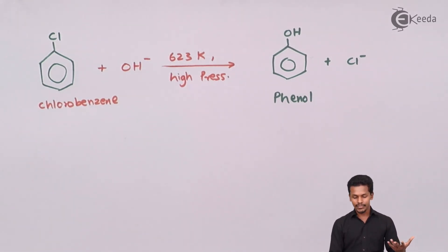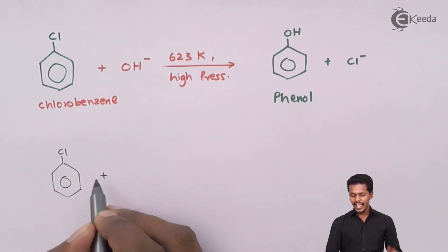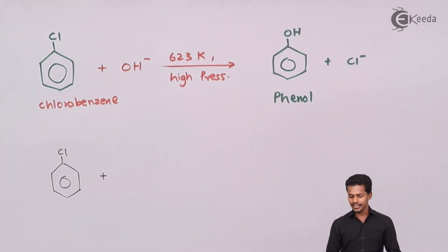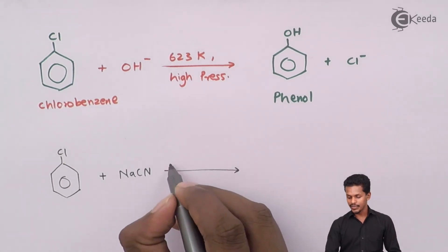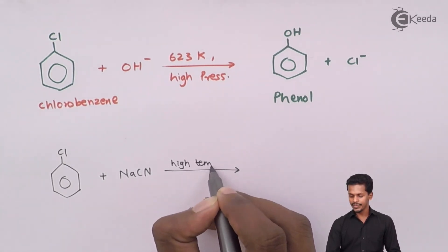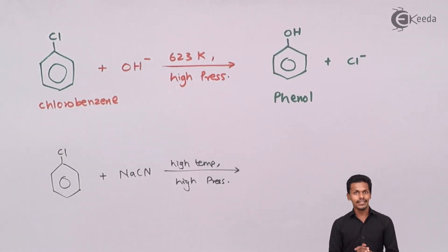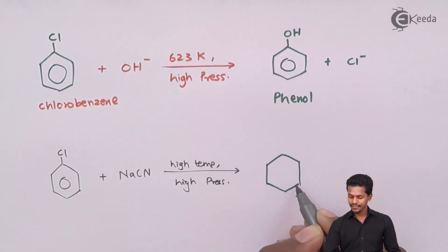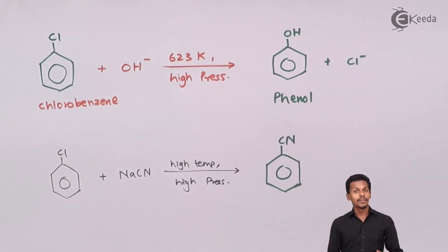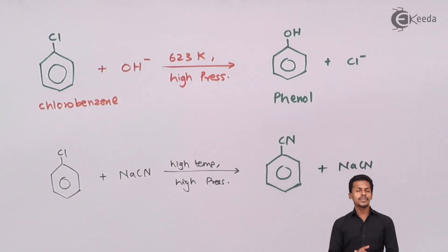Another example: chlorobenzene reacted with NaCN or HCN. Again in this reaction high temperature and high pressure are required. Under these drastic, severe conditions provided to the reactive mixture, chlorobenzene is converted into an aryl cyanide, and NaCN is removed. So these are a few examples showing that substitution reactions are possible for aryl halides but only under harsh conditions.